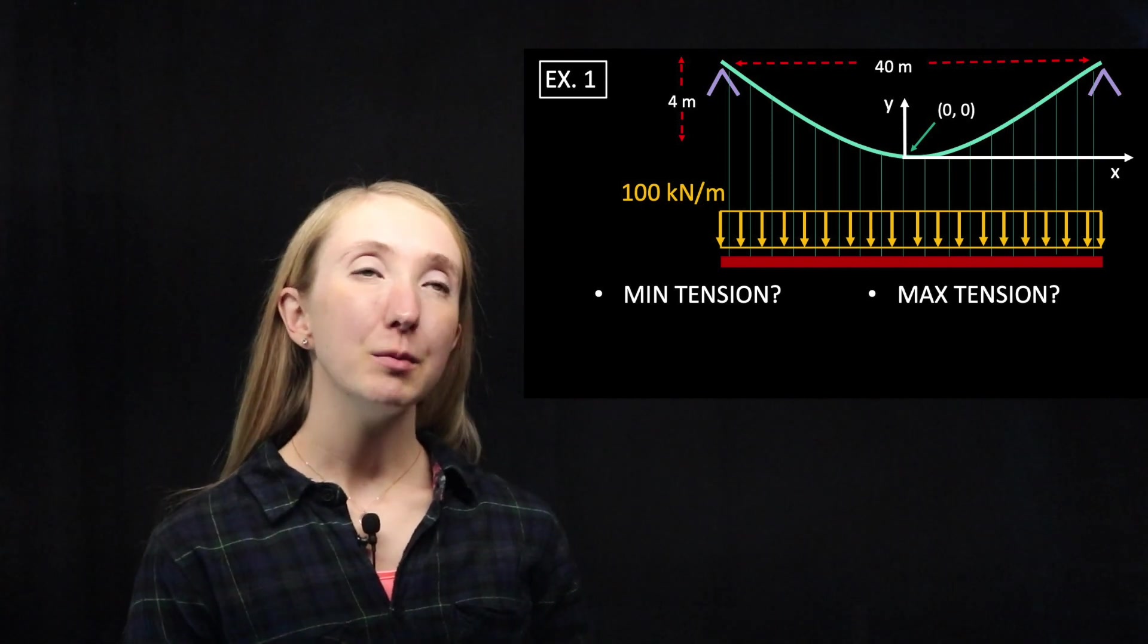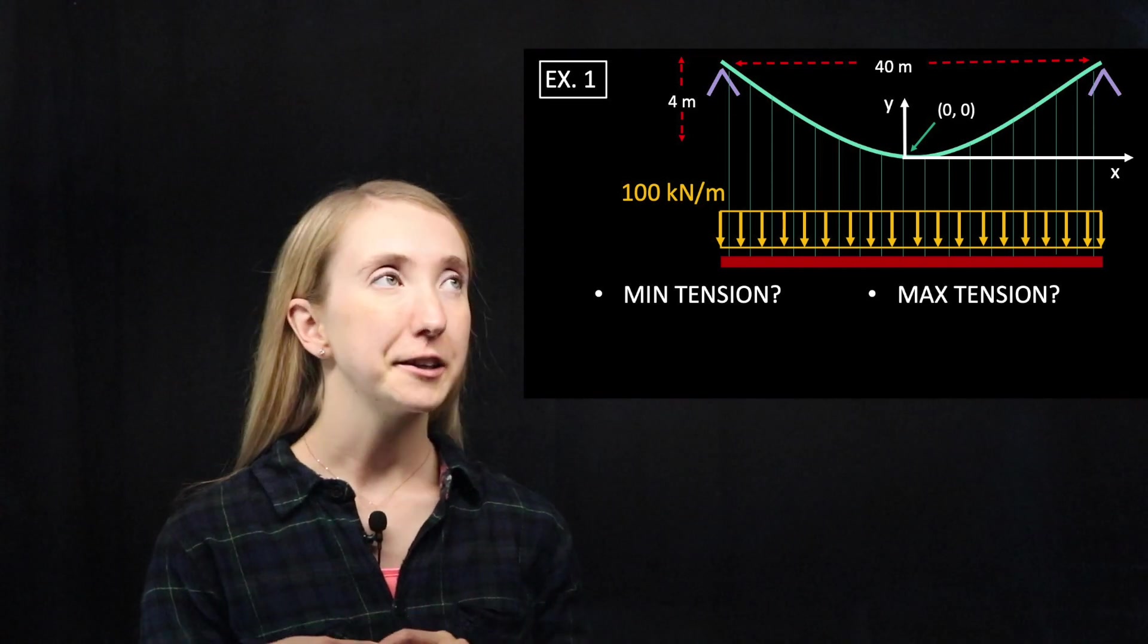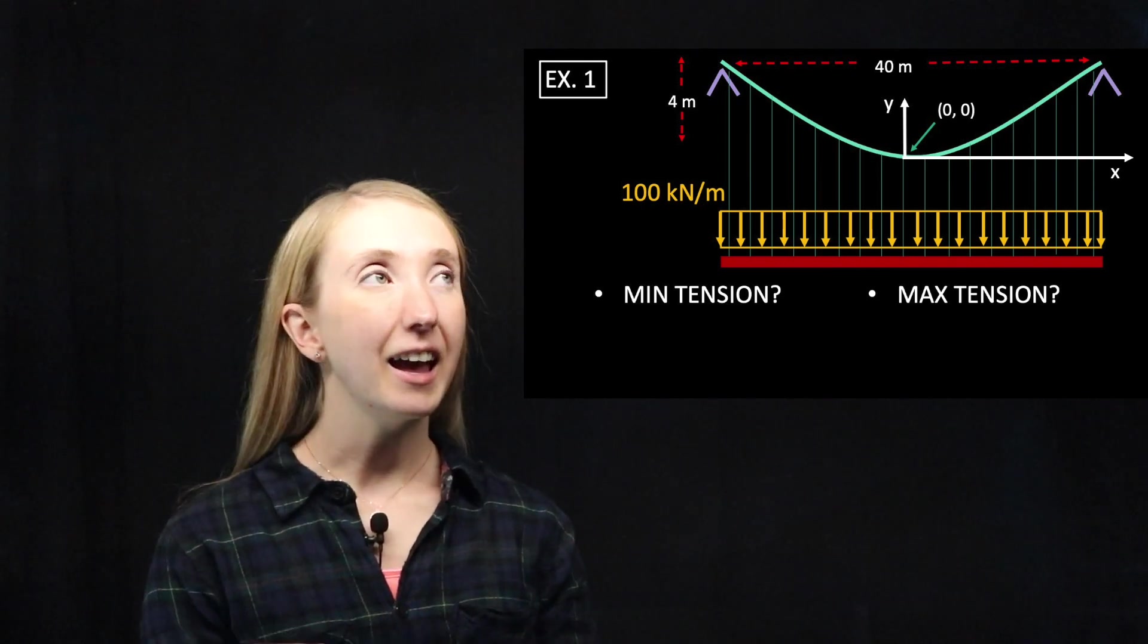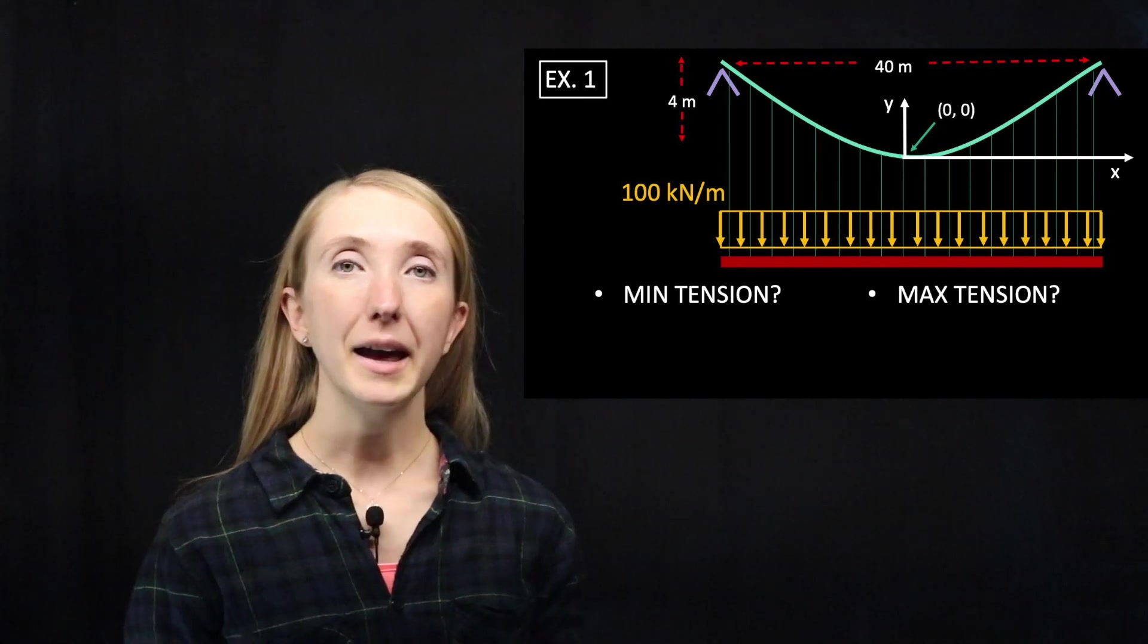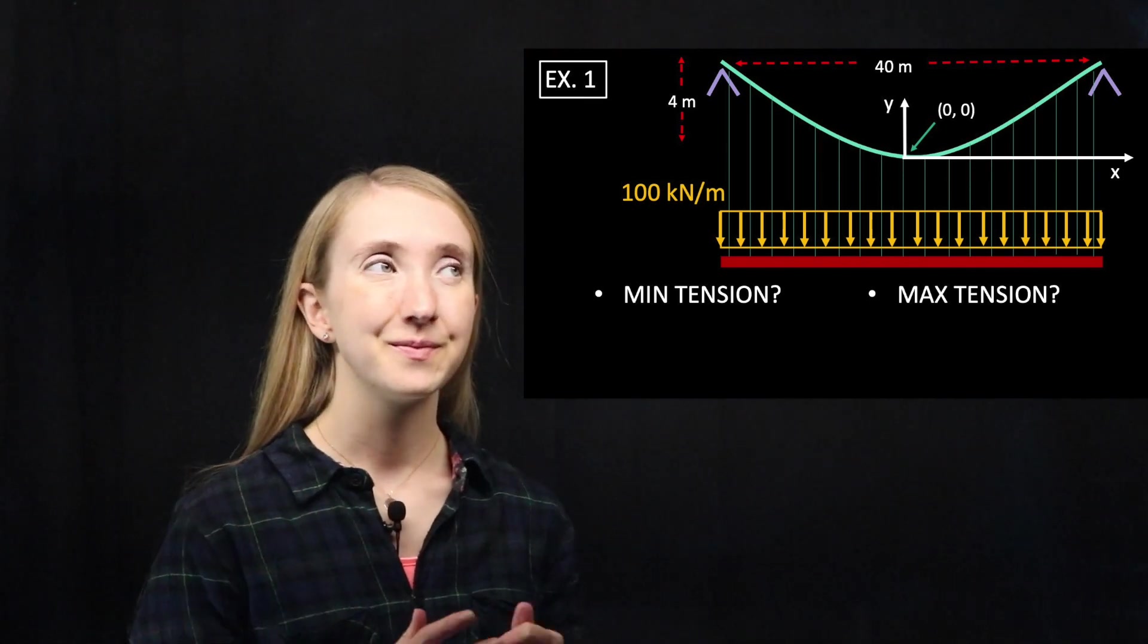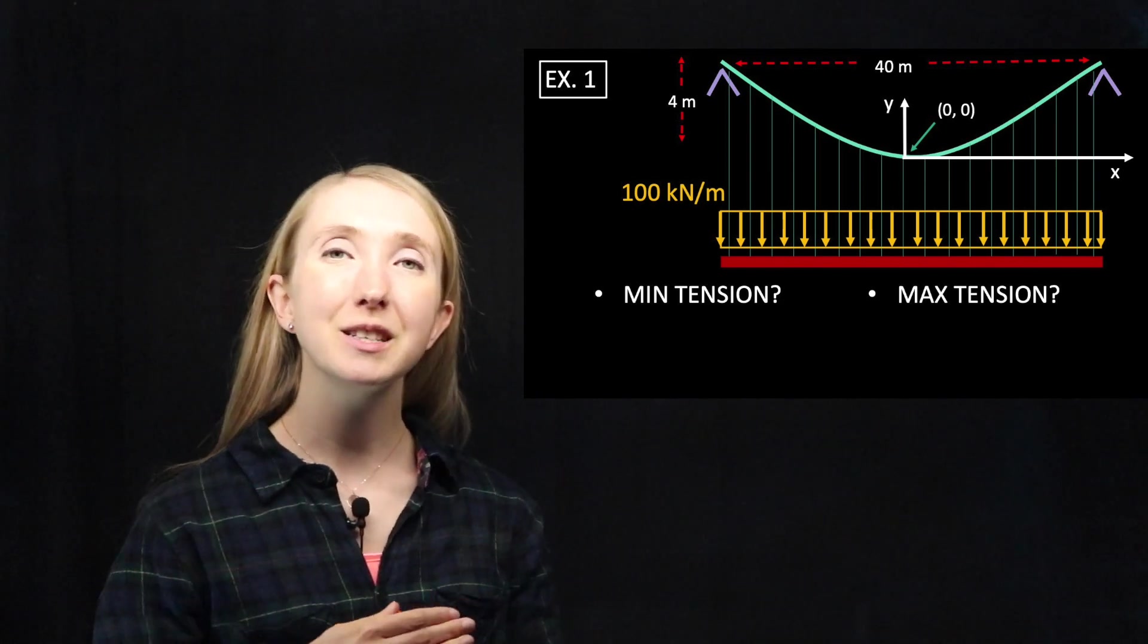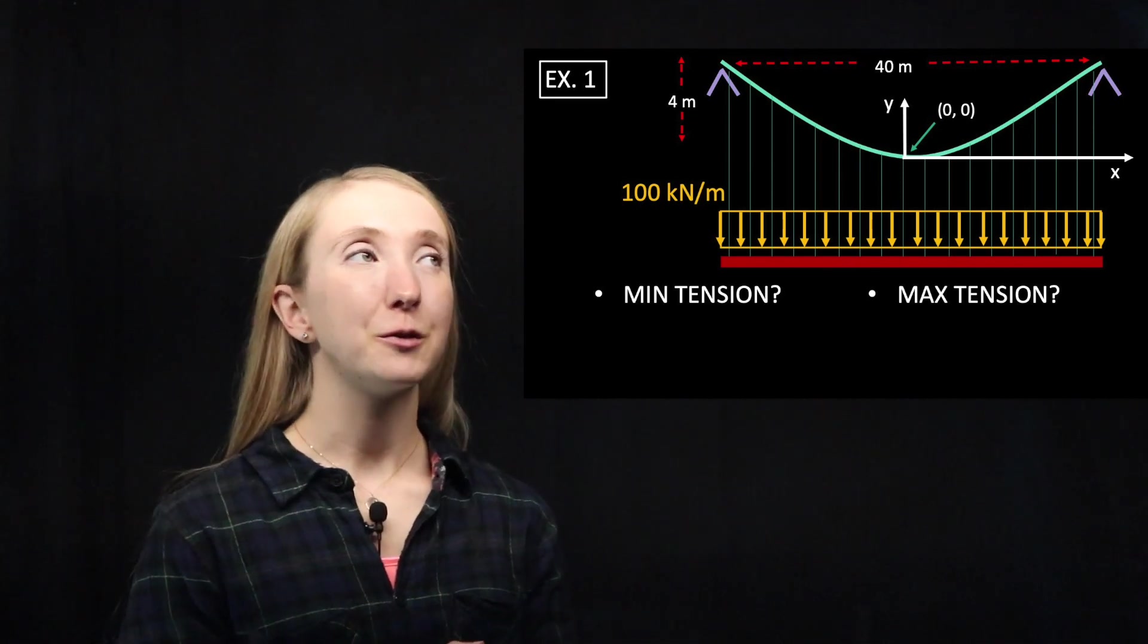We've got a cable system with uniform load and it is symmetric. We know our cable span, our cable sag, and the uniform load. We're asked to find our maximum and minimum tensions. These are the perfect conditions for us to use the formulas that we worked so hard on solving for last time.